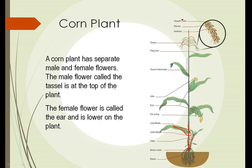An interesting thing about the corn plant is that it has separate male and female flowers. The male flower, called the tassel, is at the top of the plant. The female flower is where the ear develops, and the female parts are the silks that hang out from the ear. The corn plant is structured this way because the male parts release pollen and the corn plant is pollinated by wind. When the pollen is released, it drifts away from the corn plant and falls, eventually landing on the female flower of a neighboring plant. Once fertilization takes place, the ear develops and develops the seeds.